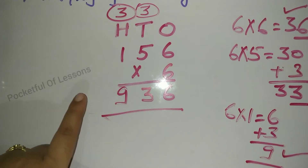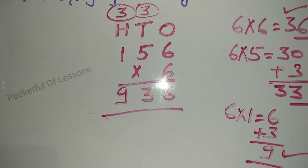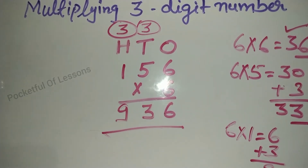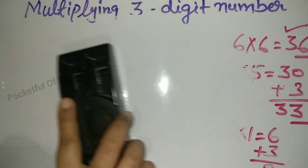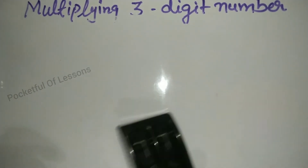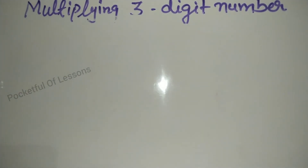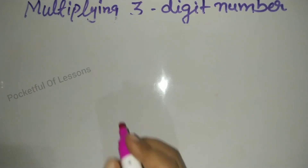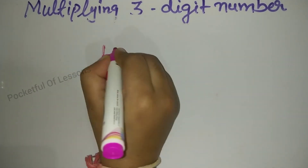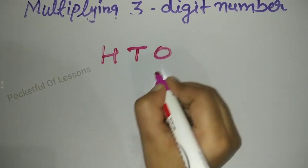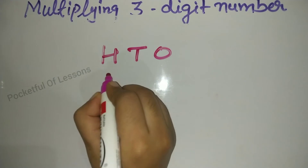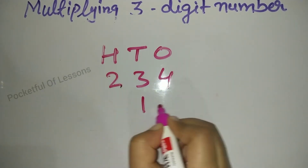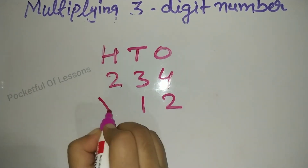We call this the product. Now next, let's see how to multiply by two-digit numbers. So here we have hundreds, tens, ones columns, and the numbers are 2, 3, 4 — and we multiply from 12. Okay?